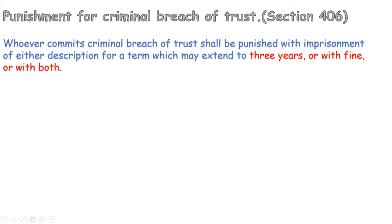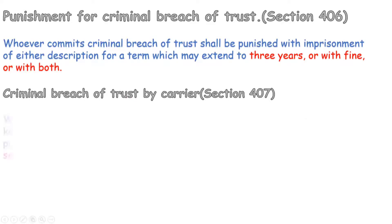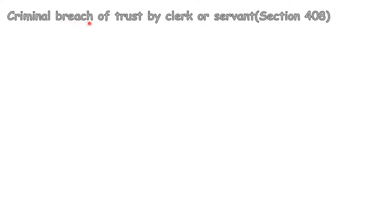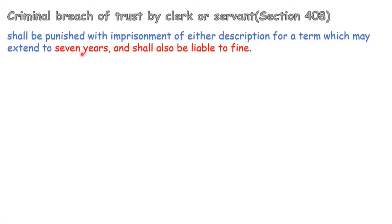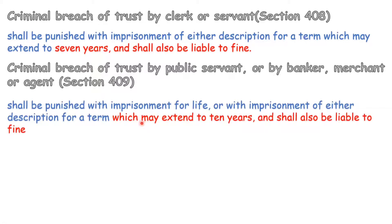Punishment for criminal breach of trust under section 406 is three years or with fine or with both. Section 407 says that whoever, being entrusted with property as a carrier, shall be punished with seven years and also be liable to fine. Criminal breach of trust by clerk or servant under section 408 carries seven years and fine. If the criminal breach of trust is done by a public servant, banker, merchant, or agent under section 409, he shall be punished with imprisonment up to ten years and also be liable to fine, because they are trusted with greater responsibility.